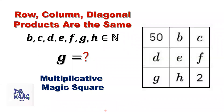Hello everyone, I'm Dr. Wang. Here is the question. This is a magical square. The product of diagonal, row, and column are the same. Those unknown entries are positive integers. What are the possible values for Q? We need to find all answers for Q.